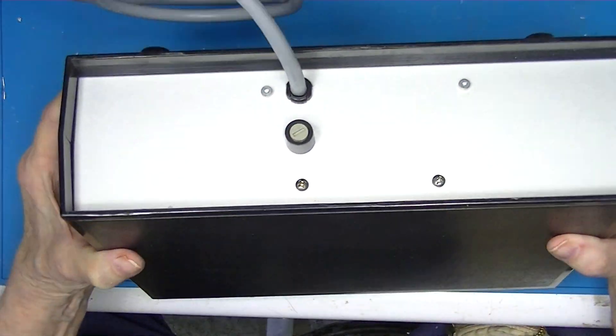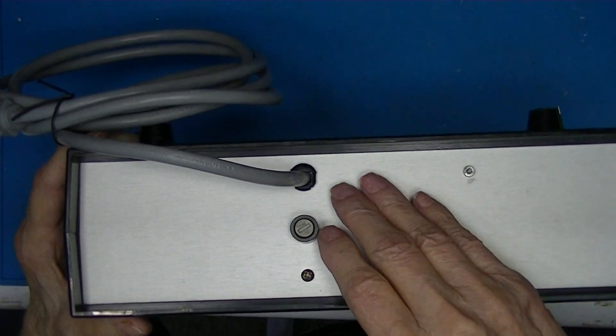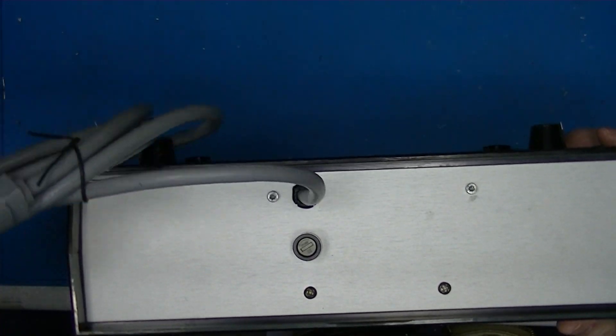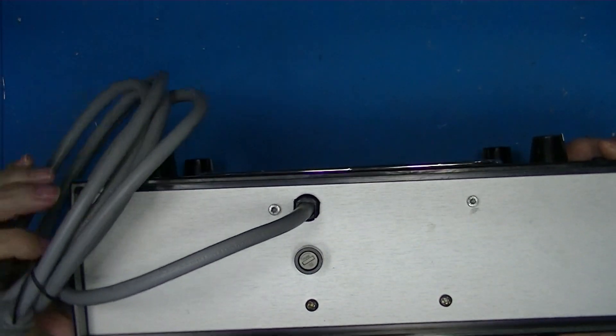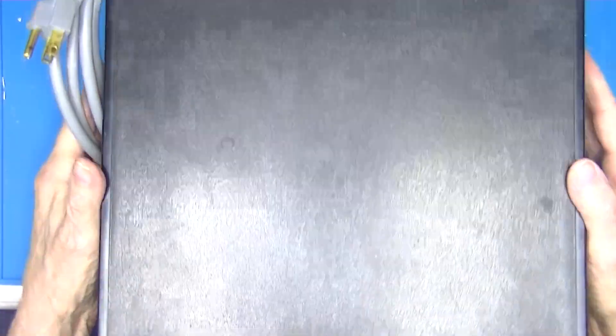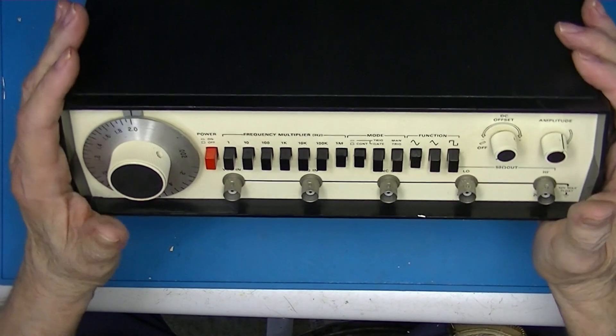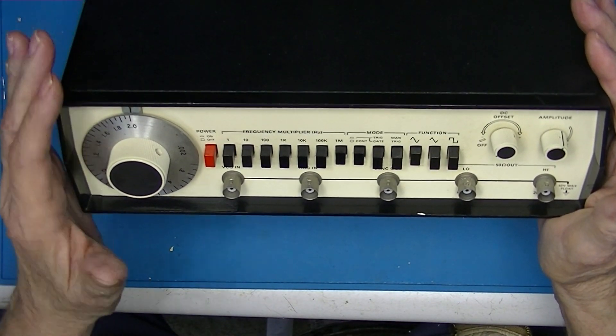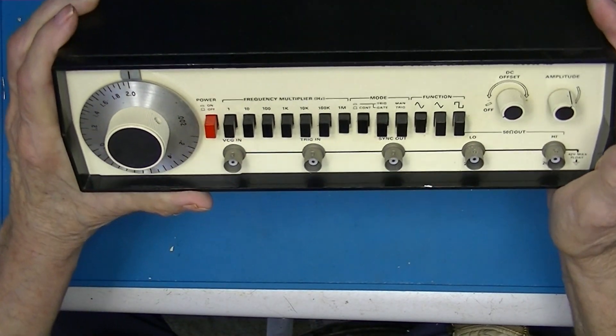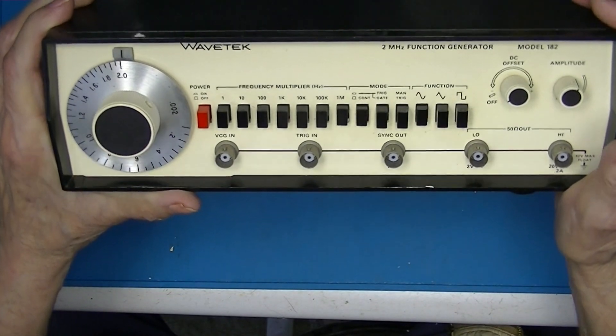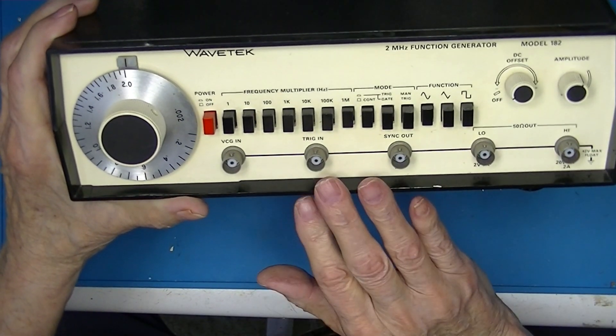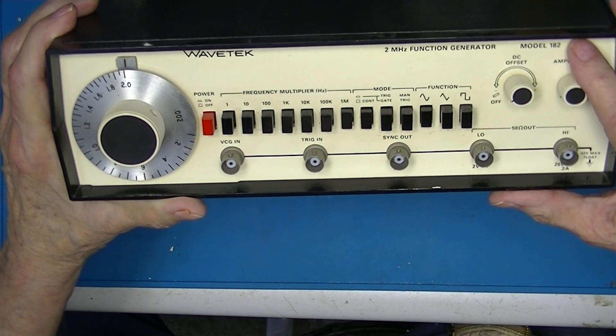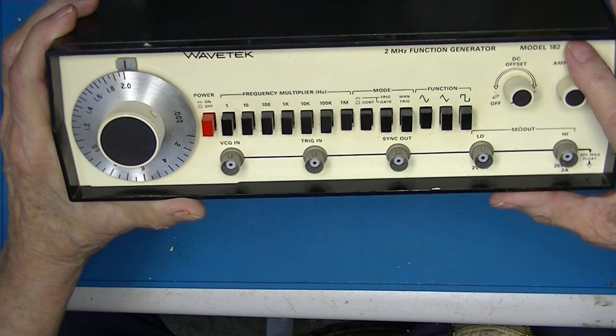The cord is permanently connected - this has no IEC connector, but it is a three prong cord. There's not a mark on this thing. Before I buy any piece of equipment like this on eBay, I make sure that I can get a manual. I did find a not very well copied schematic and operator manual of the 182.